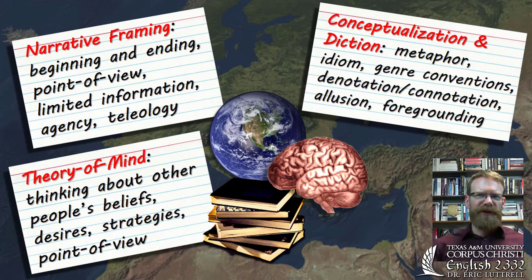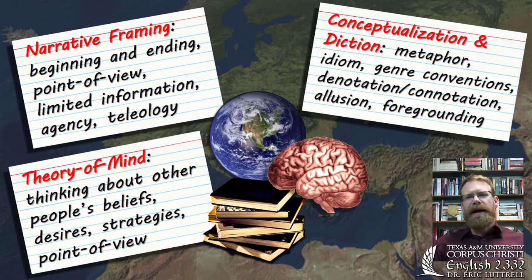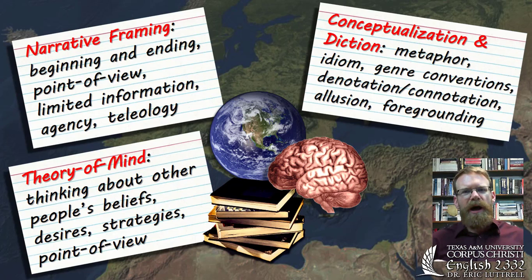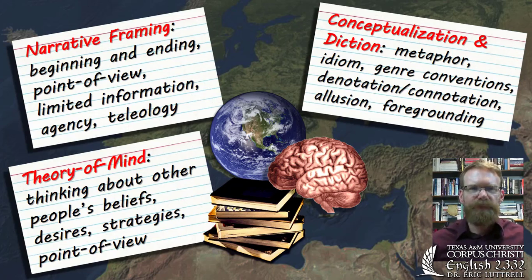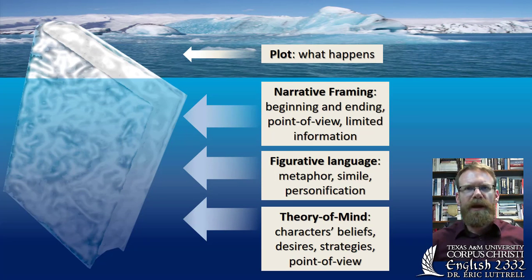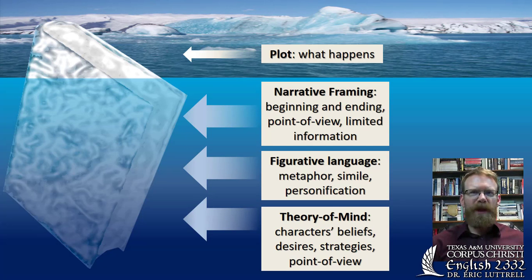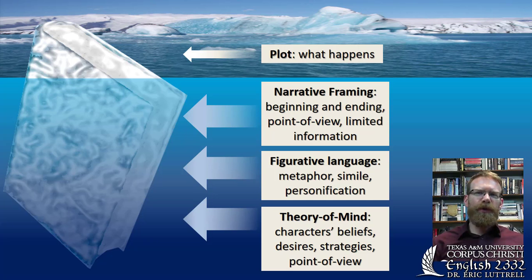I'll develop each of these three elements in later lectures, and then we'll apply them to the texts we're reading. To develop these skills, we have to go beyond what most people do when they read for pleasure — most of us read to find out what happens, to get the plot. If we just look at a narrative to see what happens, we fail to notice how we are getting that information, what might be oversimplified and what might be left out. It helps to think of a text like an iceberg: 90% of an iceberg's mass is below the water. In this class, we're going to do the difficult work of mapping out that 90% — the narration processes of framing, language choice, and social imagination, or theory of mind.